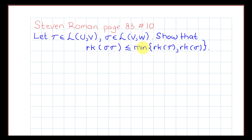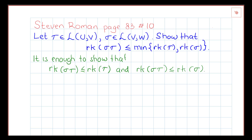We need to show that the rank of tau sigma is less than or equal to the minimum of the rank of tau and the rank of sigma. First, it is enough to show that the rank of tau sigma is smaller than both the rank of tau and the rank of sigma.